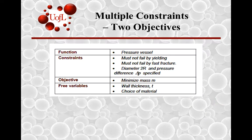The function is a pressure vessel. Constraints are you should not fail by yielding or by fracture. The diameter is specified as R and the pressure difference is specified as Delta P. The objective is to minimize the mass, and you are free to choose the material as well as the wall thickness T. That T in the design equation is what will be eliminated when we are looking at the objective of minimizing mass.